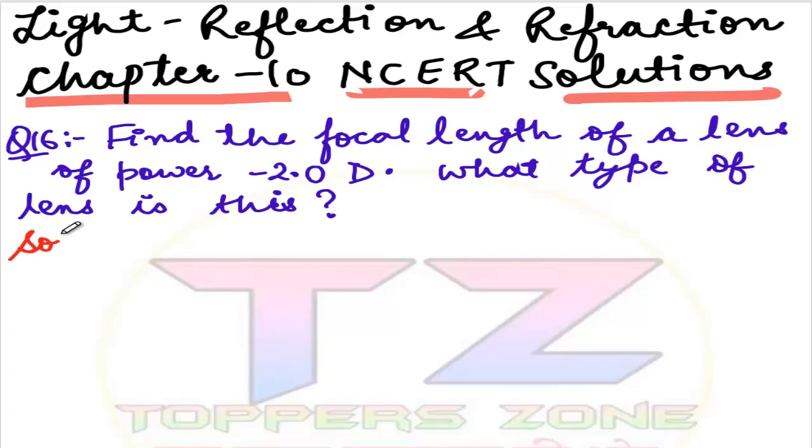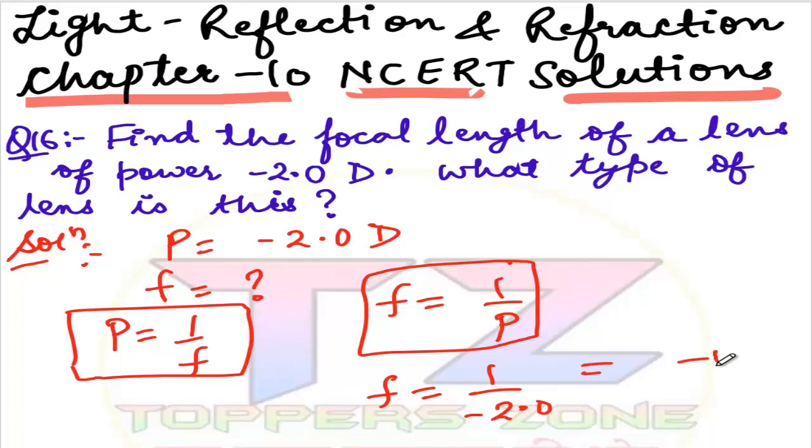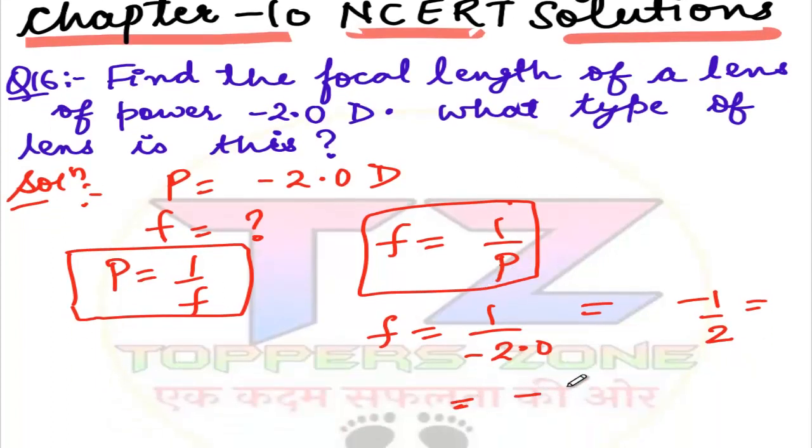Let's see what is given and what is the solution. We have power P equals minus 2.0 diopter, and focal length which we denote as f. From the formula P equals 1 by f, focal length will be f equals 1 by P. Substituting the values, f equals 1 by minus 2.0, which equals minus 0.5. So the focal length is minus 0.5 meter.